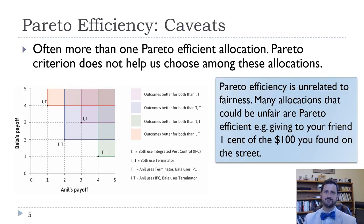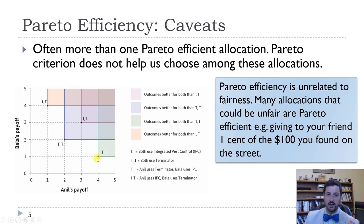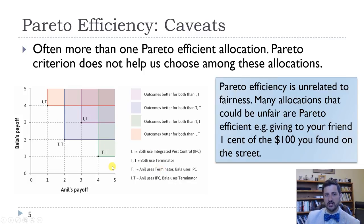The Pareto criterion doesn't necessarily help us choose between outcomes. If our three outcomes are 4-1, 3-3, and 1-4, then how do we decide what to do? Anil would prefer 4-1 if he's being completely selfish. Bala would prefer 1-4 if Bala's being completely selfish. But an outside observer might say 3-3 would be better. All three are Pareto efficient outcomes, and we have to decide which one we actually prefer.